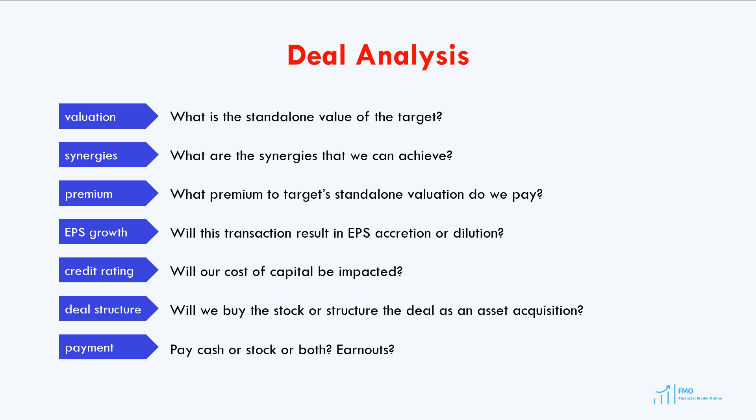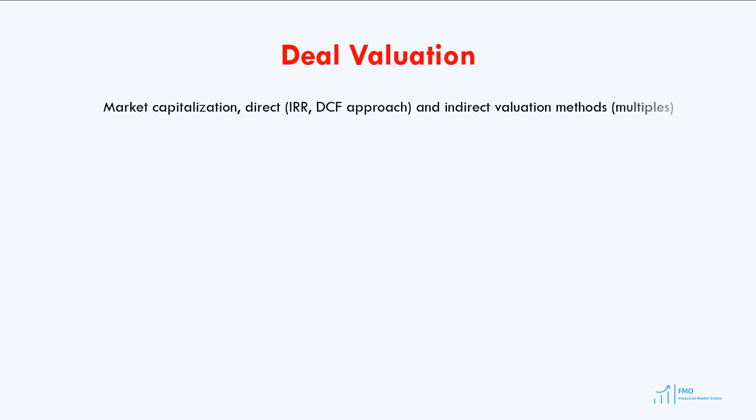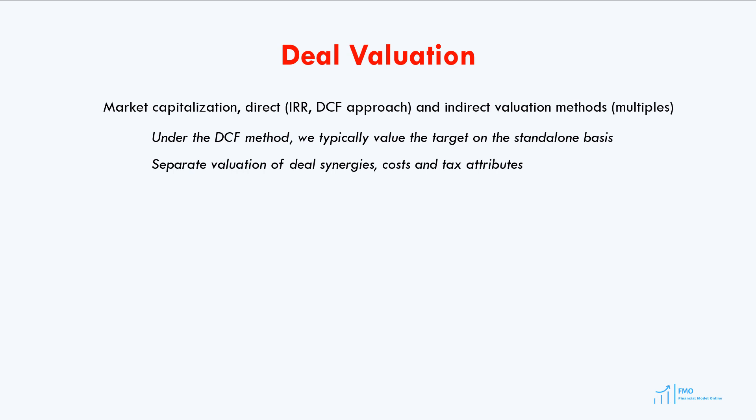For any M&A deal, the price paid to the target's shareholders is compared to the target's standalone market value. For a public company, standalone value is its market capitalization. For private companies, standalone value is estimated using direct and indirect valuation approaches. The direct approach includes discounted cash flow or internal rate of return analysis, valuing the target standalone and then valuing synergies, tax and financial benefits, and transaction costs separately. The indirect method uses market or transaction multiples to confirm the direct valuation result.